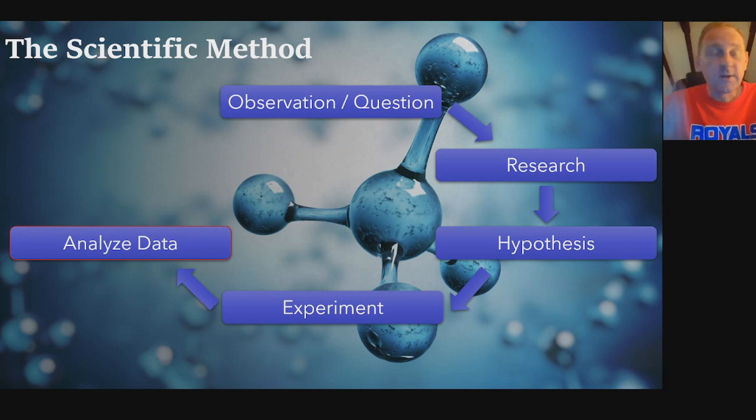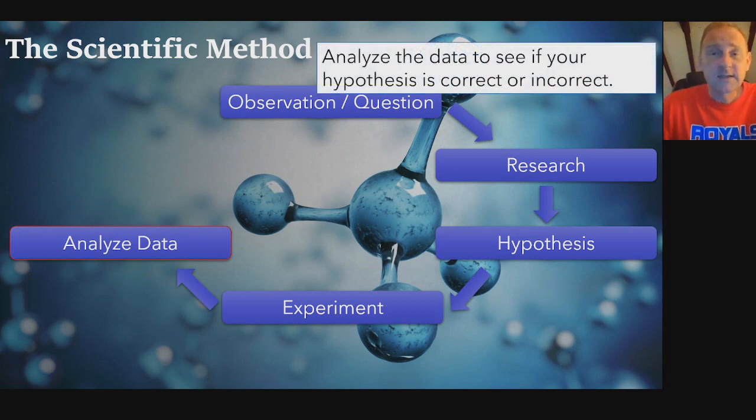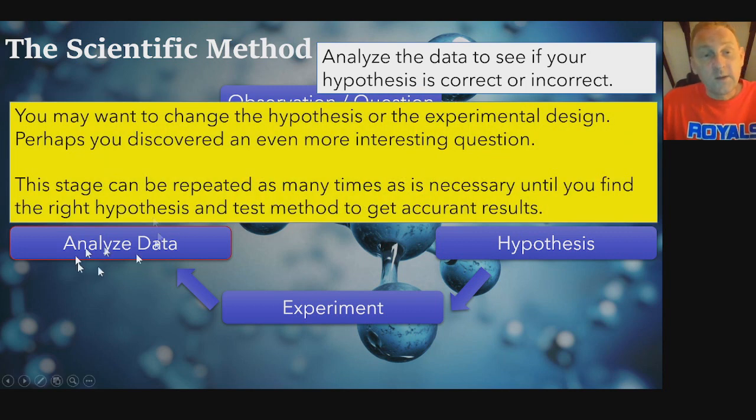At the end of your experiment, you analyze that data that you collect. You analyze the data to see if the hypothesis is correct or incorrect. Obviously, I didn't do this experiment, so I can't go any further here. I'm just throwing out there some ideas. But you can do this with anything. This is just the first thing that popped in my head because today this is what I observed. When you collect that data and analyze it, you may want to change the hypothesis or the experiment design. You might have realized that the design didn't really work very well. You couldn't control the constants, perhaps. Maybe you discover a more interesting question as you start collecting that data. This stage can be repeated as many times as necessary until you find the right hypothesis and test method to get accurate results. You can keep tweaking things as you learn until you come up with a better process, a better question that actually gets asked.